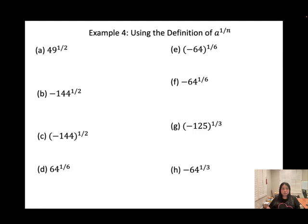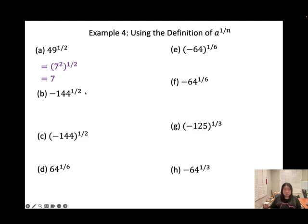Example 4, number 1: 49 to the power of 1 half. Rewrite 49 as 7 squared. n is even so 49 must be positive — it is, so this is good. The 1 half times 2 cancels out, giving 7. For b, the n is even, but the 1 half only applies to 144, not the negative sign. Put the negative outside, rewrite 144 as 12 squared, cancel the 2, giving negative 12.